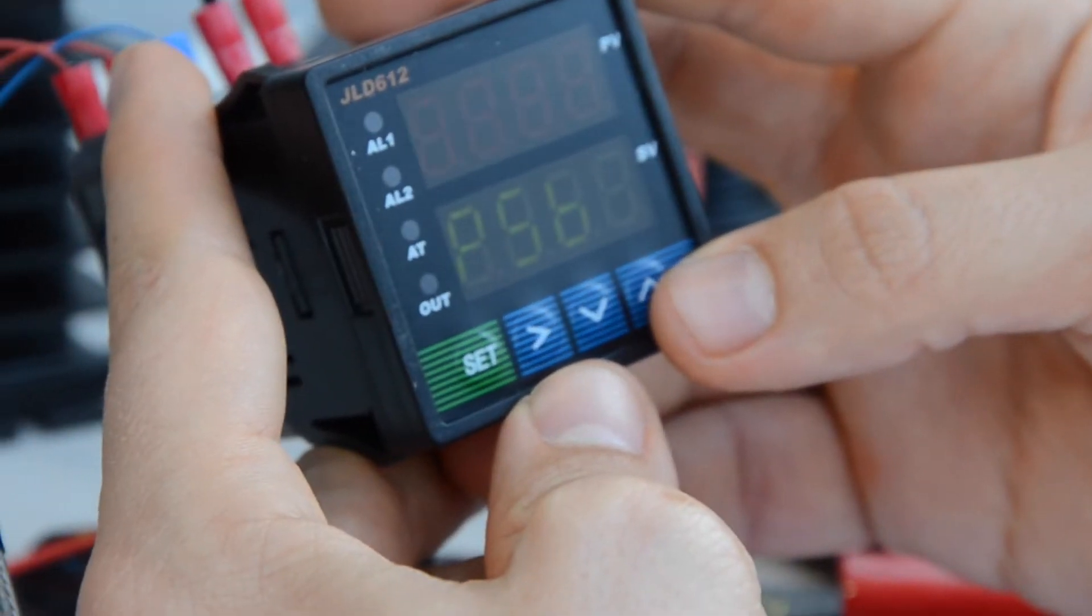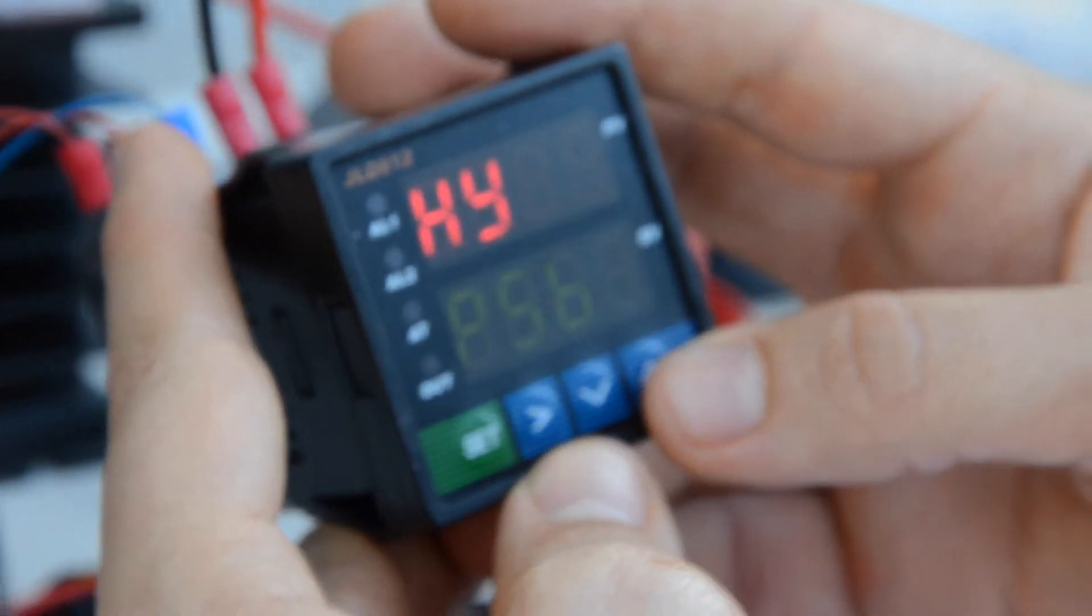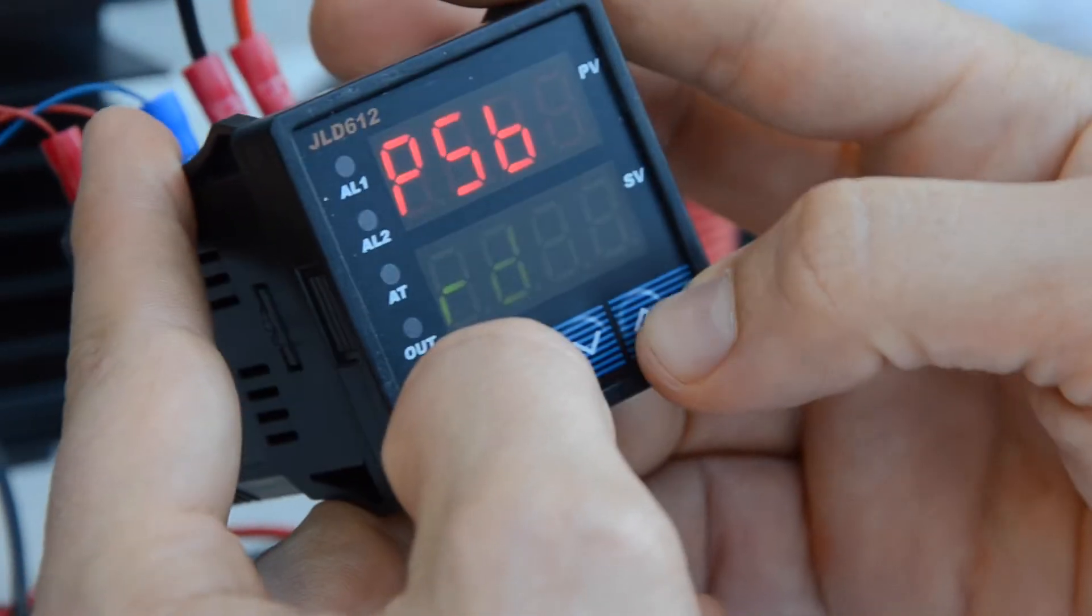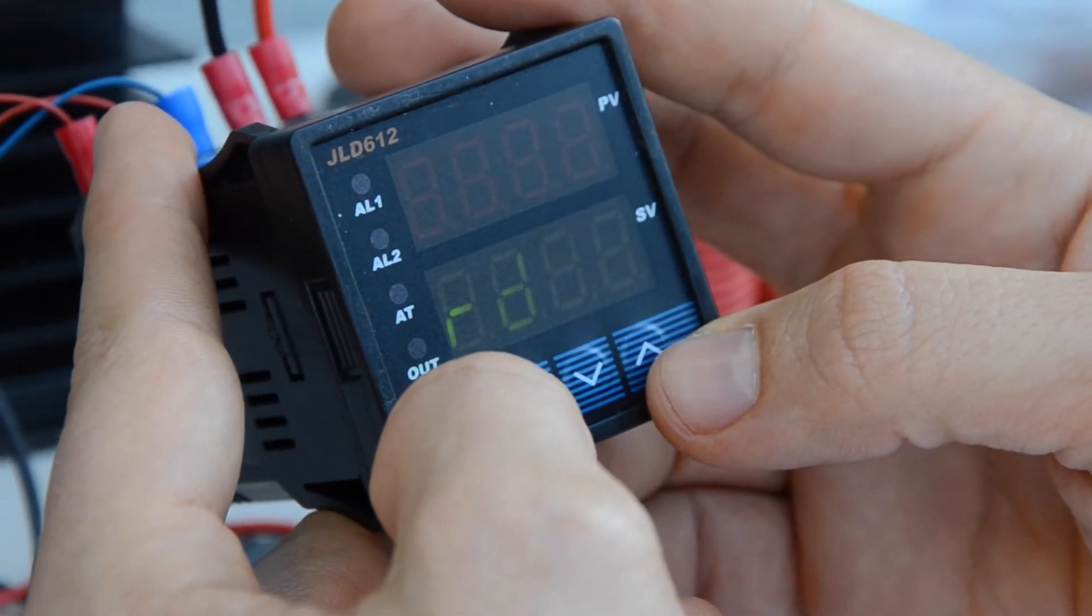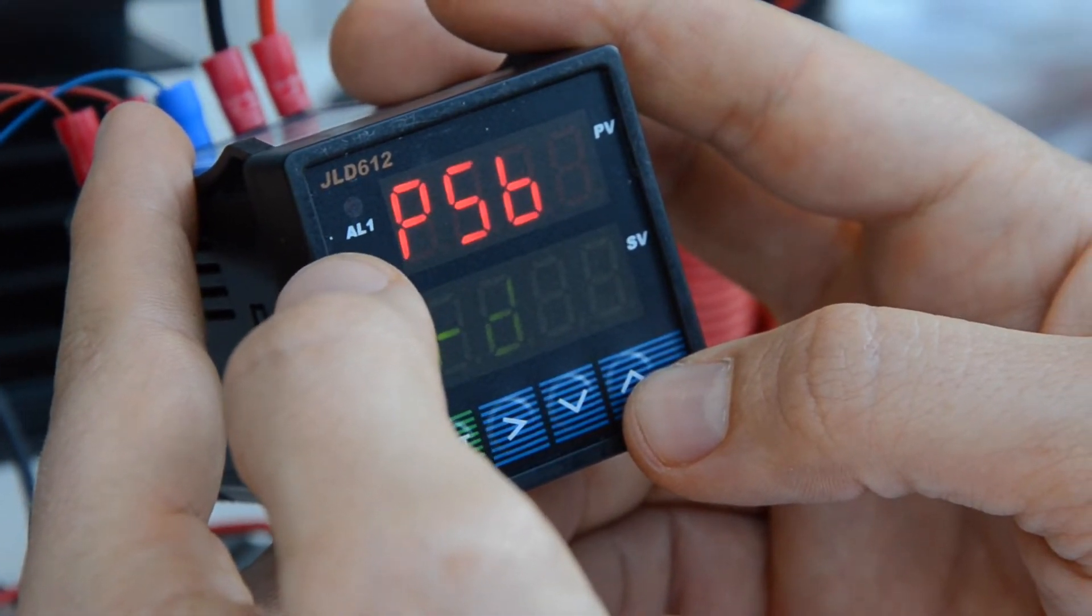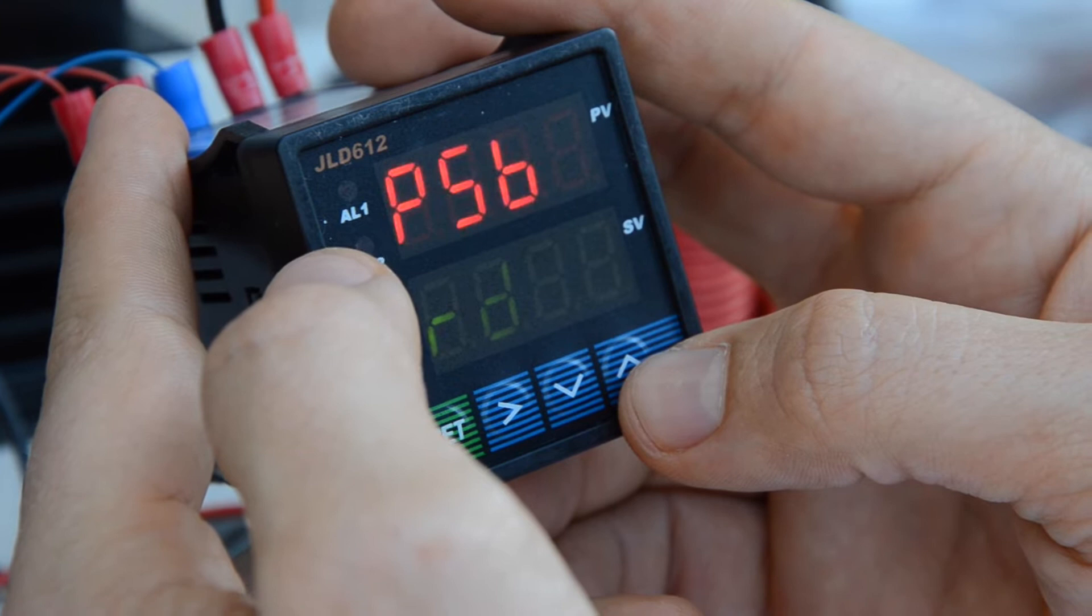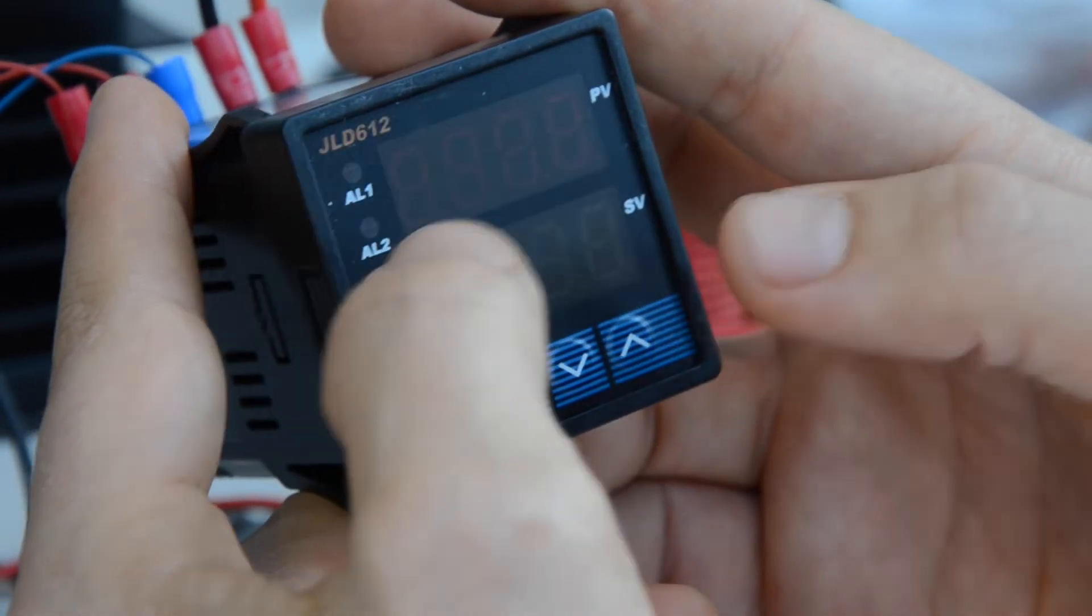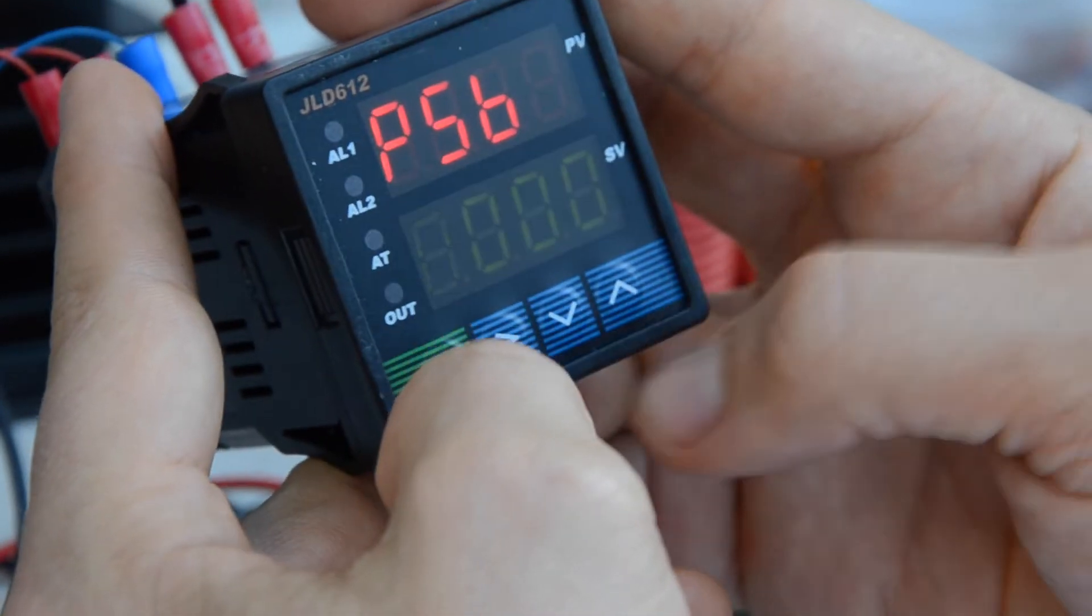So we'll set that one. Going up to the next one, HY, we left at the default setting. For the next one, this PSB, we also left at the default setting. This one specifically corrects if you have a thermocouple that may be reading one or two or three degrees off and you measure it with a better thermometer, you can adjust that by moving it plus or minus.